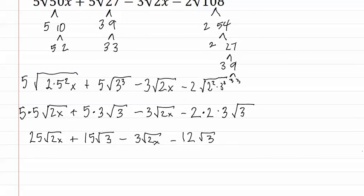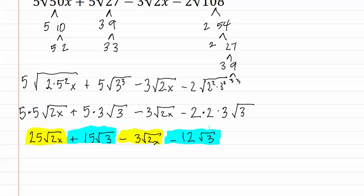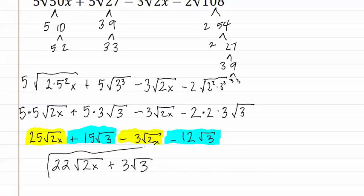Now we must combine each of these that is similar. This one has two x inside its radical, and so does this one. Next, this one has a square root of three, and so does this one. Combining like radicals: twenty-five square root two x minus three square root two x becomes twenty-two square root two x. The fifteen root three minus twelve root three becomes positive three root three. This gives us our final answer.